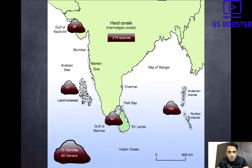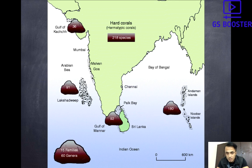In India, corals are found mainly in four regions: one is the Andaman and Nicobar Islands, the second is Lakshadweep, the third is Gulf of Mannar, and the fourth is Gulf of Kutch. The NCERT book explicitly states that coral reefs are found in these four regions in India. The maximum corals are found in the Andaman and Nicobar Islands.